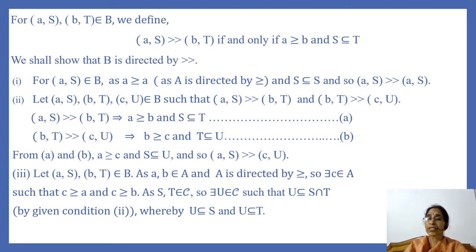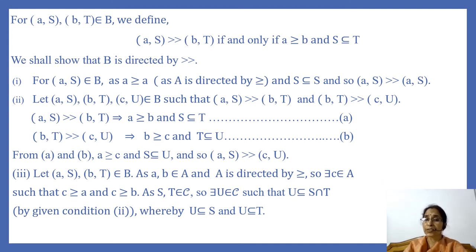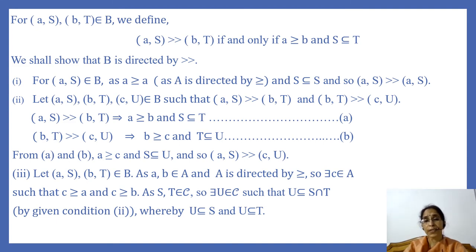For reflexivity: for any ordered pair (a, S), we know that a ≥ a because a is an element of directed set A and ≥ is reflexive in A. Also S ⊆ S. So (a, S) ≫ (a, S), meaning this relation is reflexive.